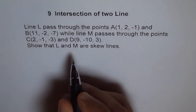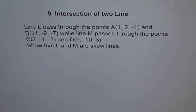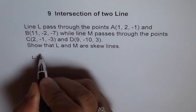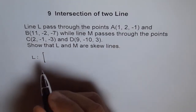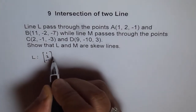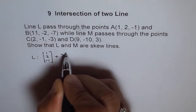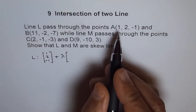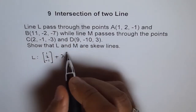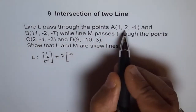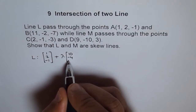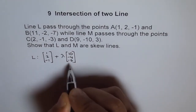So let's see what line L is. Line L goes through points A and B, so we can write it in matrix form using point A(1, 2, -1) plus parameter lambda times the direction vector B minus A, which gives us (10, -4, -6).